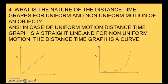Next question: what is the nature of the distance-time graph for uniform and non-uniform motion of an object? Answer: in case of uniform motion, the distance-time graph is a straight line, and for non-uniform motion, the distance-time graph is a curve. The first graph shows uniform motion where we get a straight line passing through the origin, whereas in the second graph the graph is not a straight line but a curve, and that is for the non-uniform motion of an object.